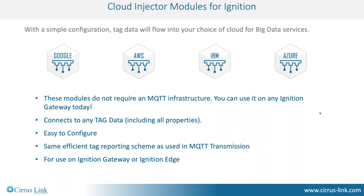The cloud injector modules have the same report-by-exception scheme as the Transmission module. They are cost-efficient: when many changes are happening, they concatenate those into one message packet, so you're not sending lots of small messages and getting charged more. They work on Ignition or Ignition Edge and are used for applications such as predictive maintenance, big data analytics, digital twins, and putting data in data lakes. Many enterprise customers use these tools from a central Ignition standpoint to push data into cloud services in a standardized approach.